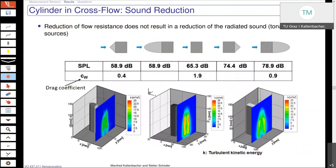Let's have this case here — we have already ordered it from the lowest sound pressure level generated at the shedding frequency to the highest one. It is also interesting to look at the drag coefficient, which gives you the idea about whether you increase or decrease the flow resistance. And you see it is not consistent — it increases up here to our standard square cylinder and then it even decreases, and still we have an increase in the sound pressure level. So we cannot just look at the drag coefficient. Another possibility is to look at the turbulent kinetic energy.